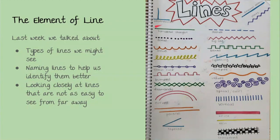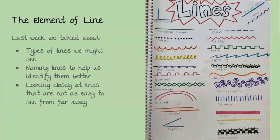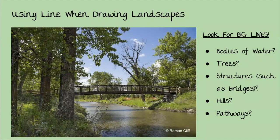Lines can be described as horizontal, perpendicular — meaning at 90 degrees like the corner of a square — diagonal, and vertical, up and down. We also talked about the thickness of lines. Naming lines helps us identify them better so that when we're out sketching we have a name for what we're seeing. We also looked at paying close attention to lines that are not easy to see from far away — last week we focused on zooming in.